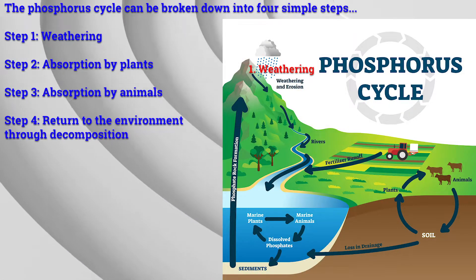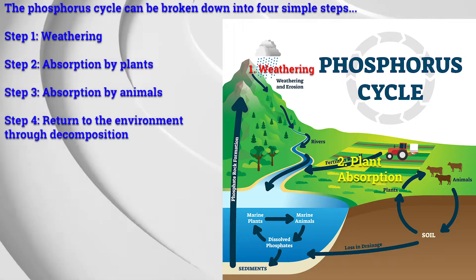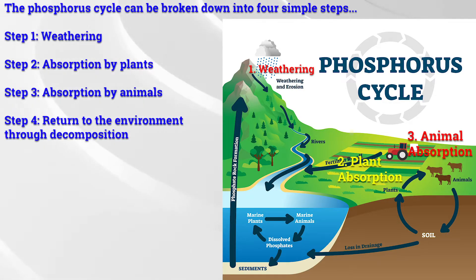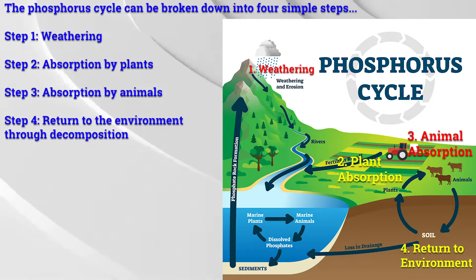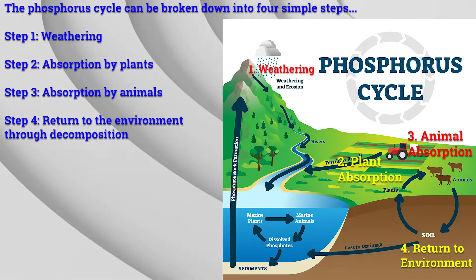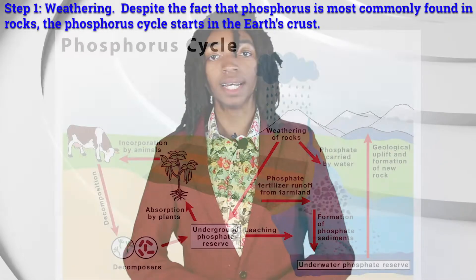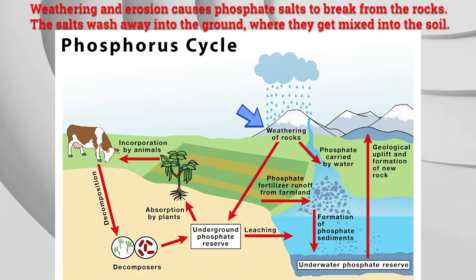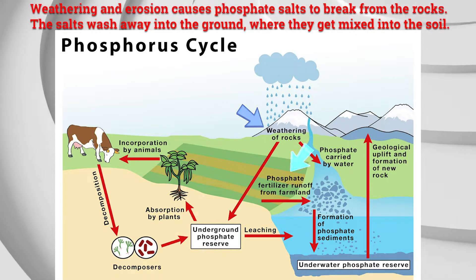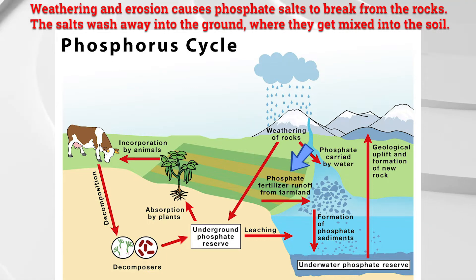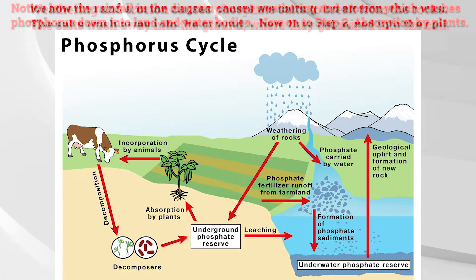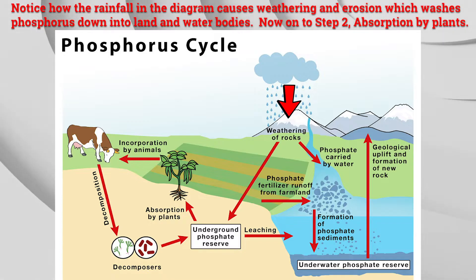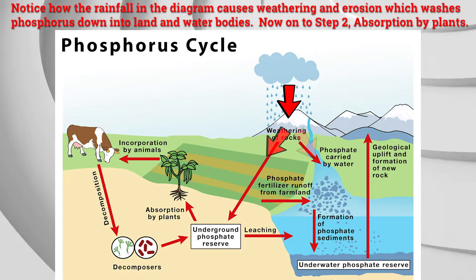Step 1: Weathering. Despite the fact that phosphorus is most commonly found in rocks, the phosphorus cycle starts in the Earth's crust. Weathering and erosion cause phosphate salts to break from the rocks. The salts wash away into the ground, ready to get mixed into the soil. Notice how the rainfall in the diagram causes weathering and erosion, which washes phosphorus down into land and water bodies.